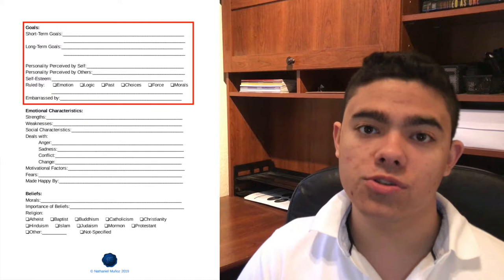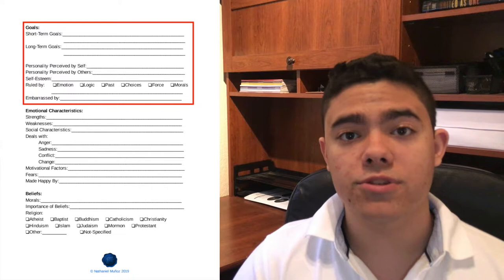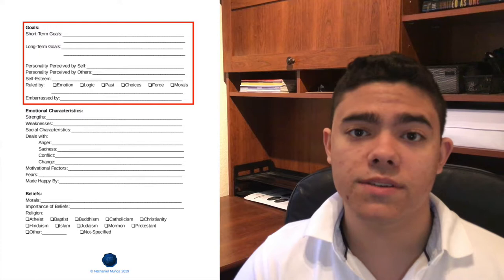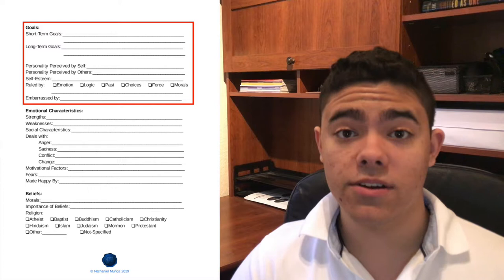Next on the list, we have the personality perceived by self and personality perceived by others. This is very important because oftentimes how a character perceives themselves is very different than how others perceive them, and this could ultimately affect how your novel runs. For example, if you have a character that sees themselves as very powerful, very mighty, but other people just see them as arrogant, that could definitely play an important role in how other people interact with them.